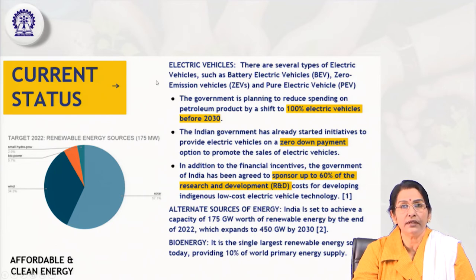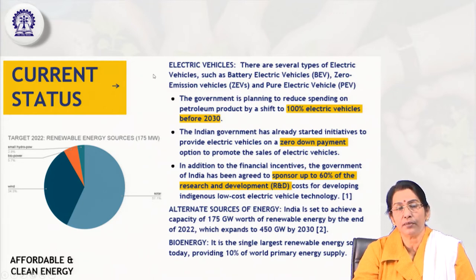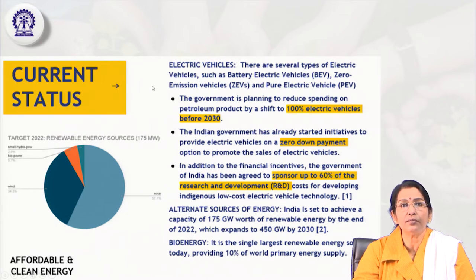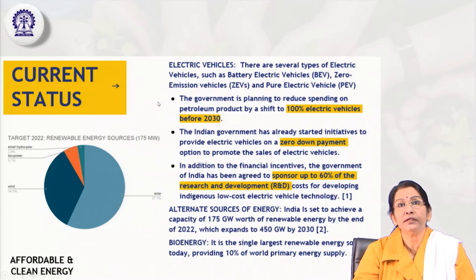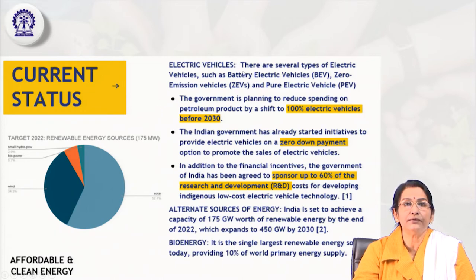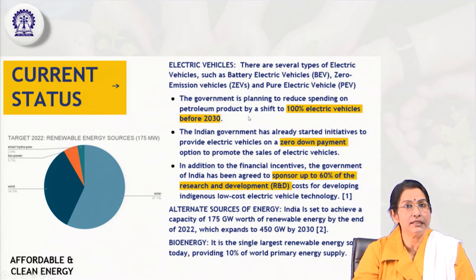The government is focusing more on electric vehicles — battery electric vehicles and zero-carbon-emission pure electric vehicles — to replace petroleum and diesel-oriented vehicles, which create carbon pollution and environmental damage. The plan is to reduce spending on petroleum products by shifting to 100 percent electric vehicles by 2030 or before. Chargeable battery electric vehicles are going to replace the whole automobile sector.